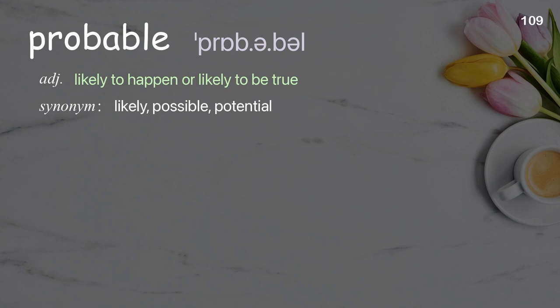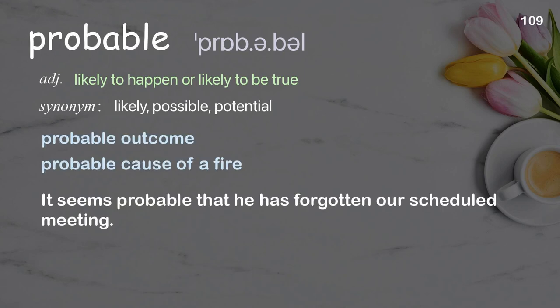Probable: likely to happen or likely to be true. Examples: probable outcome, probable cause of a fire. It seems probable that he has forgotten our scheduled meeting.